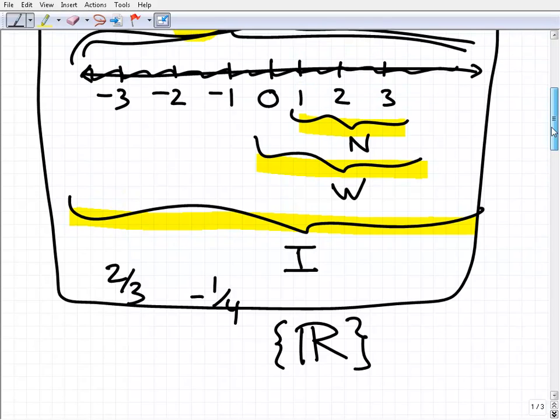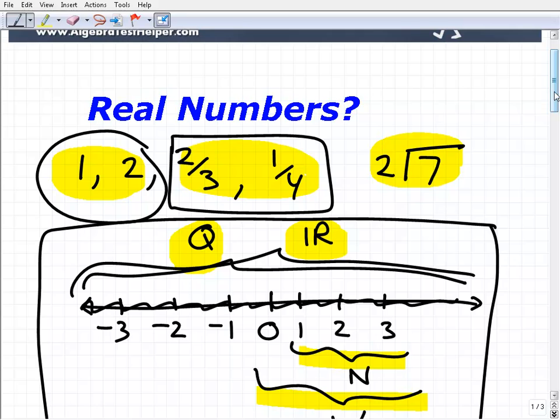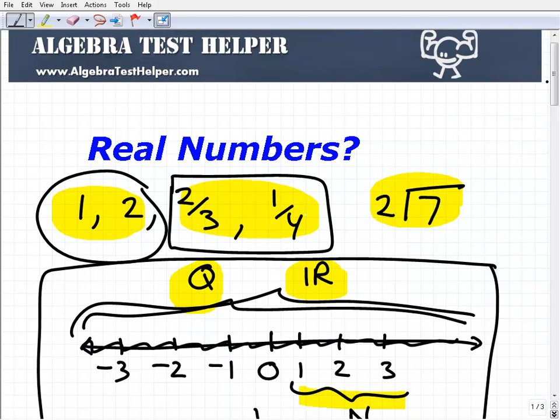All right, so those are real numbers, and you're saying, well, is that all the different type of numbers there are? And actually there's a lot more type of numbers in mathematics, namely the complex number system, right? And if you want to learn about that or anything else about mathematics, and in particular algebra...